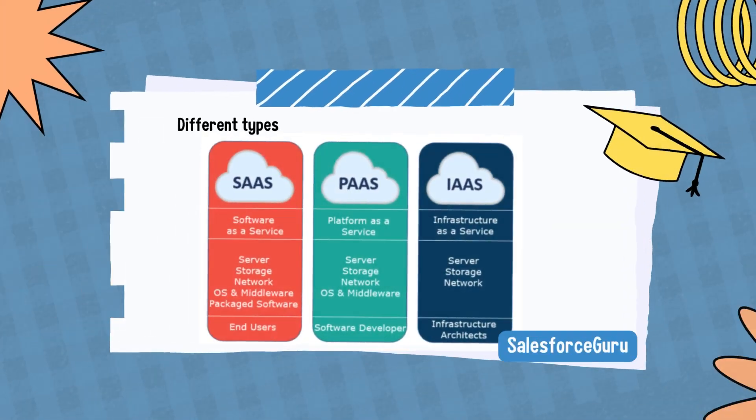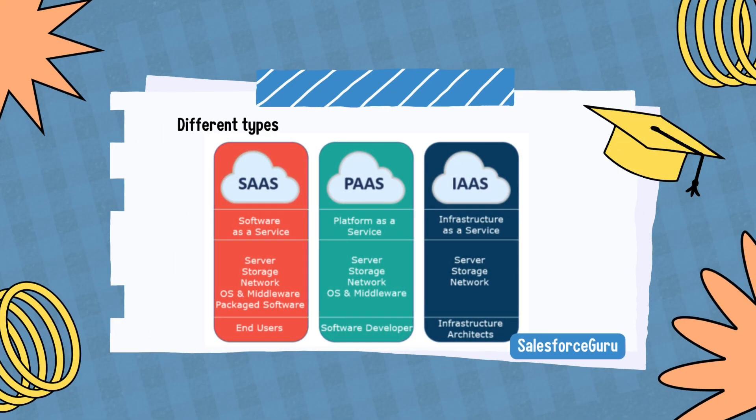Infrastructure as a Service, IaaS, delivers everything from operating systems to servers and storage through IP-based connectivity as part of an on-demand service. Clients do not need to purchase software or servers and instead procure these resources in an outsourced on-demand service. Popular examples of the IaaS system include IBM Cloud and Microsoft Azure.